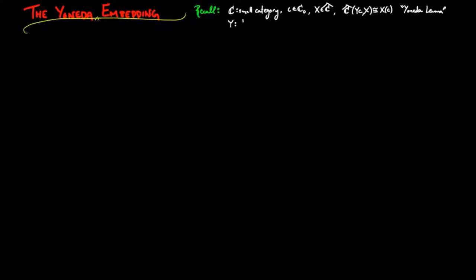This functor y, which assigns each C object its representable container, is full and faithful. This is called the Yoneda embedding. In other words, there is a copy of the category C in the category of pre-sheaves on C.